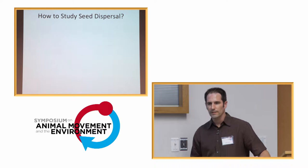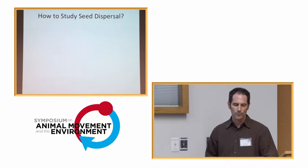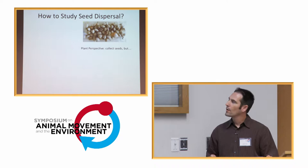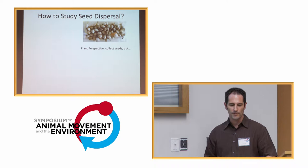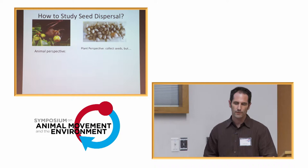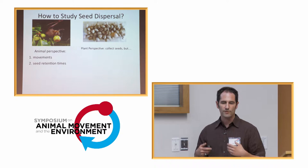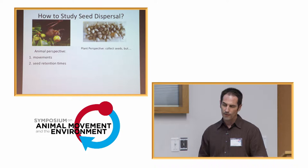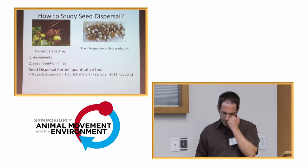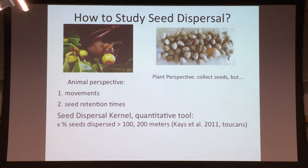So how do we study seed dispersal if the vectors of seed dispersal are animals? We can collect seed traps underneath plants and look at it from the plant perspective, but we don't necessarily know where a seed was dispersed, when, and under what circumstances. We can get more information by tracking the animals. We need two pieces of information: a distribution of animal movements and seed retention times — how long it takes for an animal to consume a fruit and then regurgitate or defecate the seed. From these distributions, we can make a seed dispersal kernel by combining them.